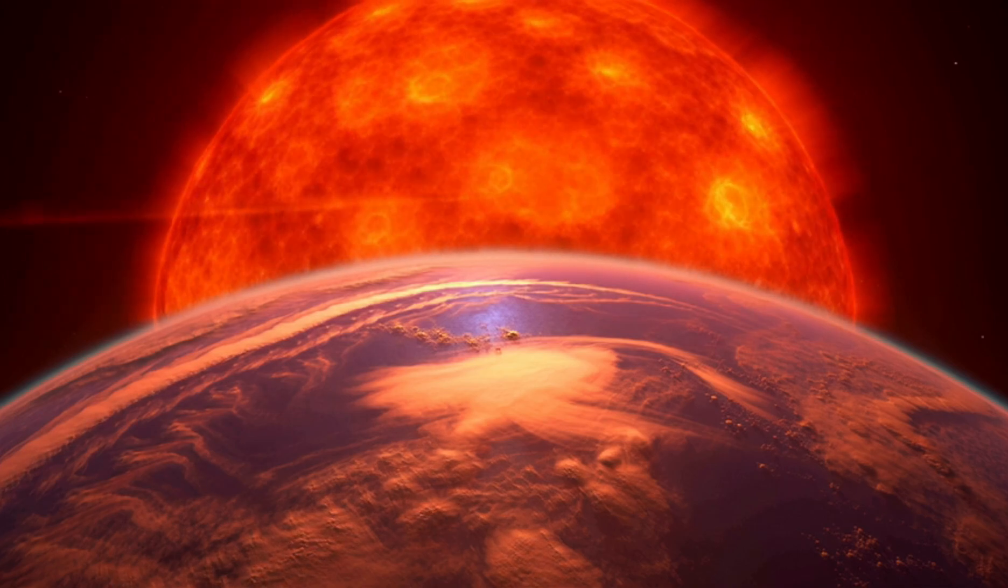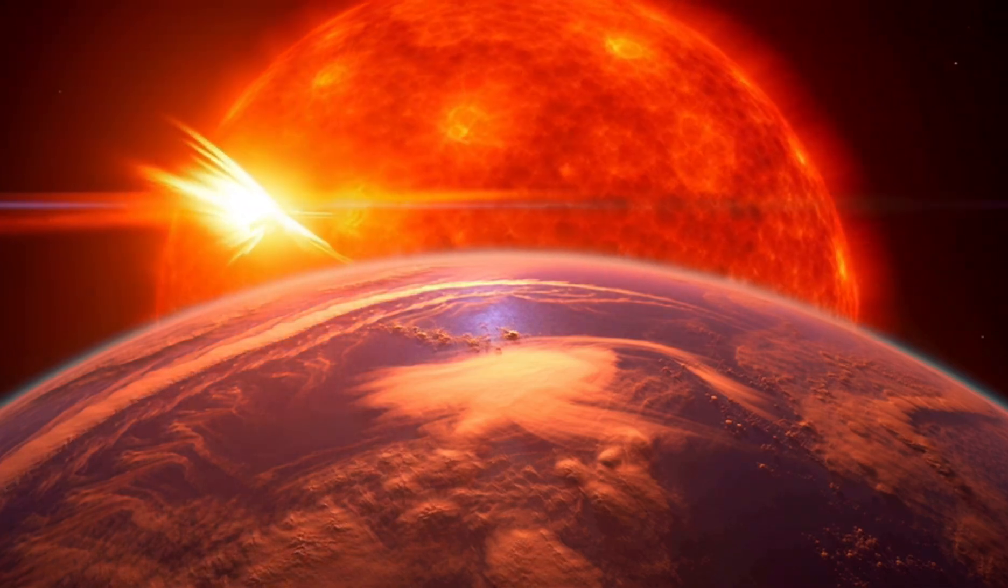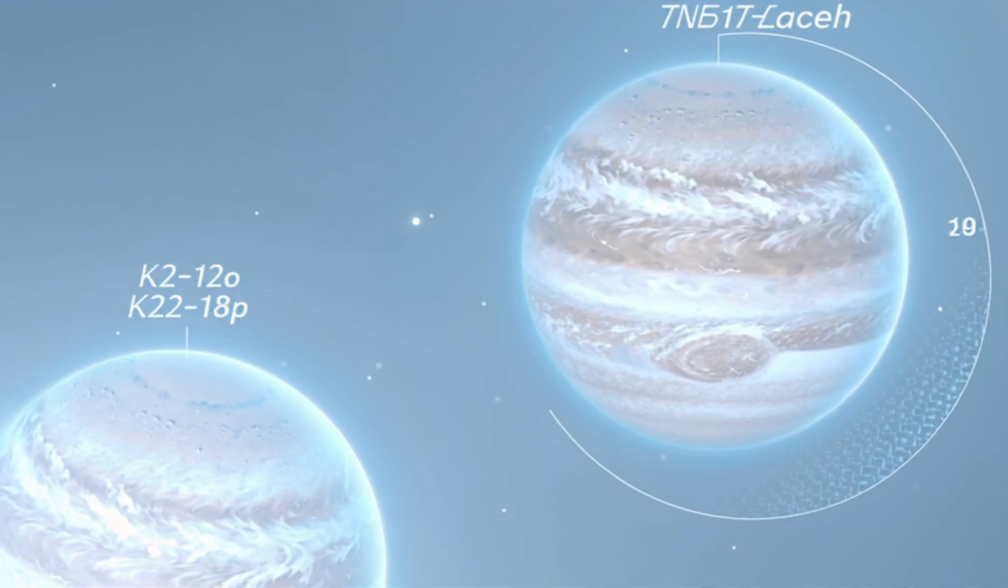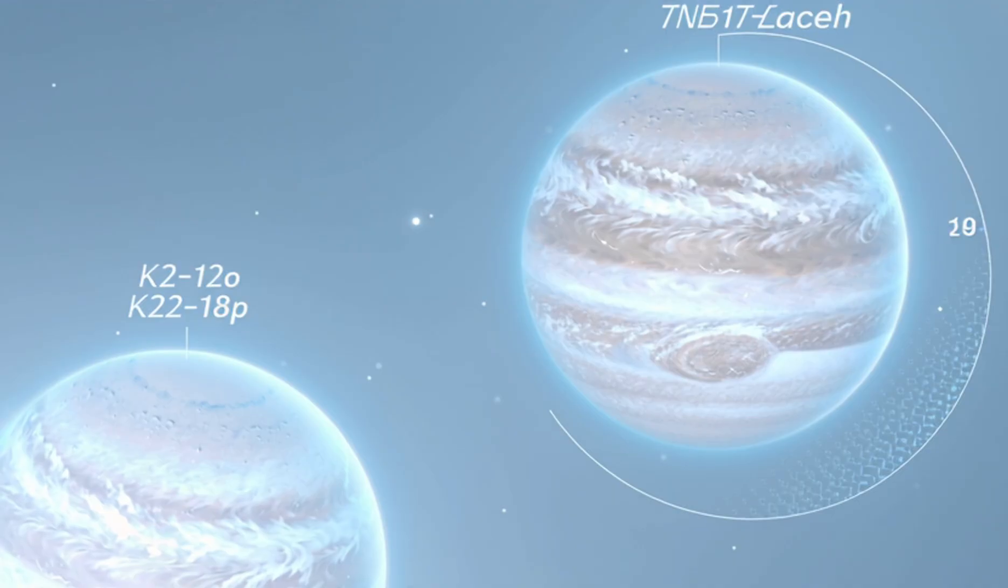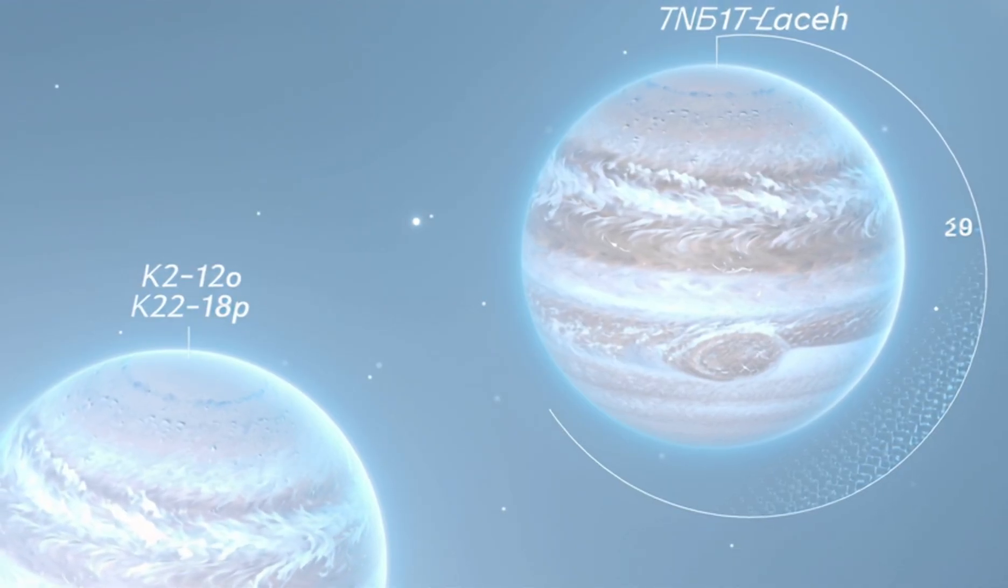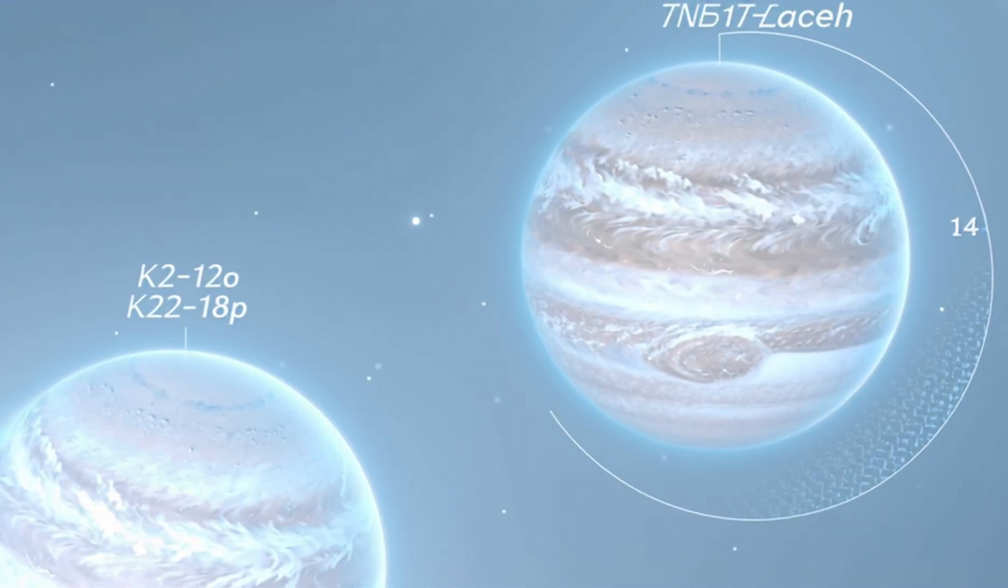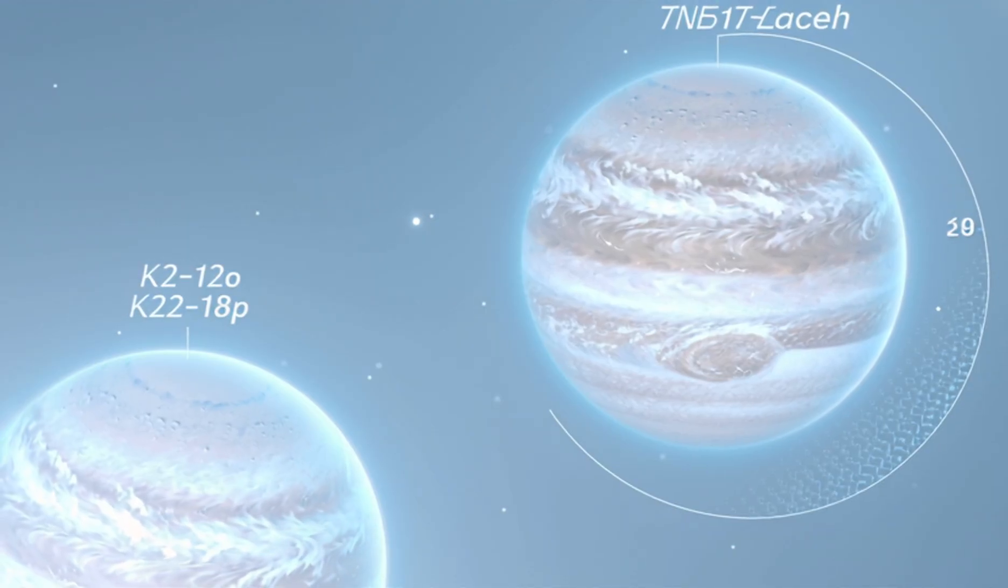Is K2-18B a rocky super-Earth or a mini-Neptune with a gas envelope? Scientists believe it has a solid core surrounded by hydrogen, creating a unique hybrid type: a Hycean world.